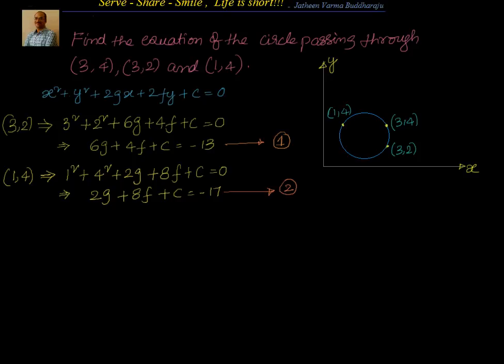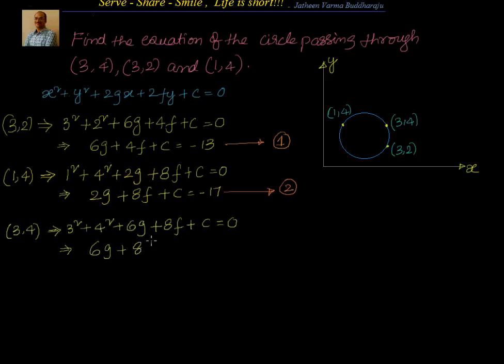Now let's substitute the third point (3,4). Substituting x=3, y=4 gives 9 + 16 + 6g + 8f + c = 0, which simplifies to 6g + 8f + c = −25. That is Equation 3.